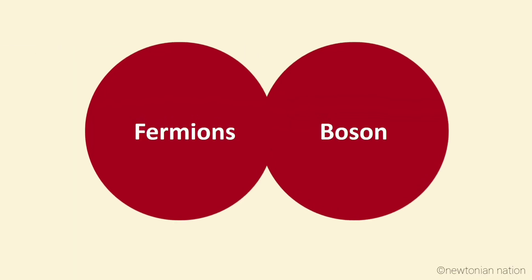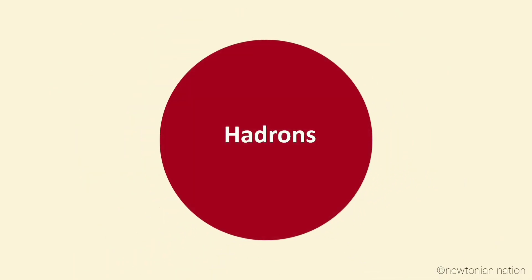Fermions and bosons in the Standard Model together explain other subatomic particles called hadrons. A hadron is a subatomic composite particle made up of two or more quarks held together by the strong force.